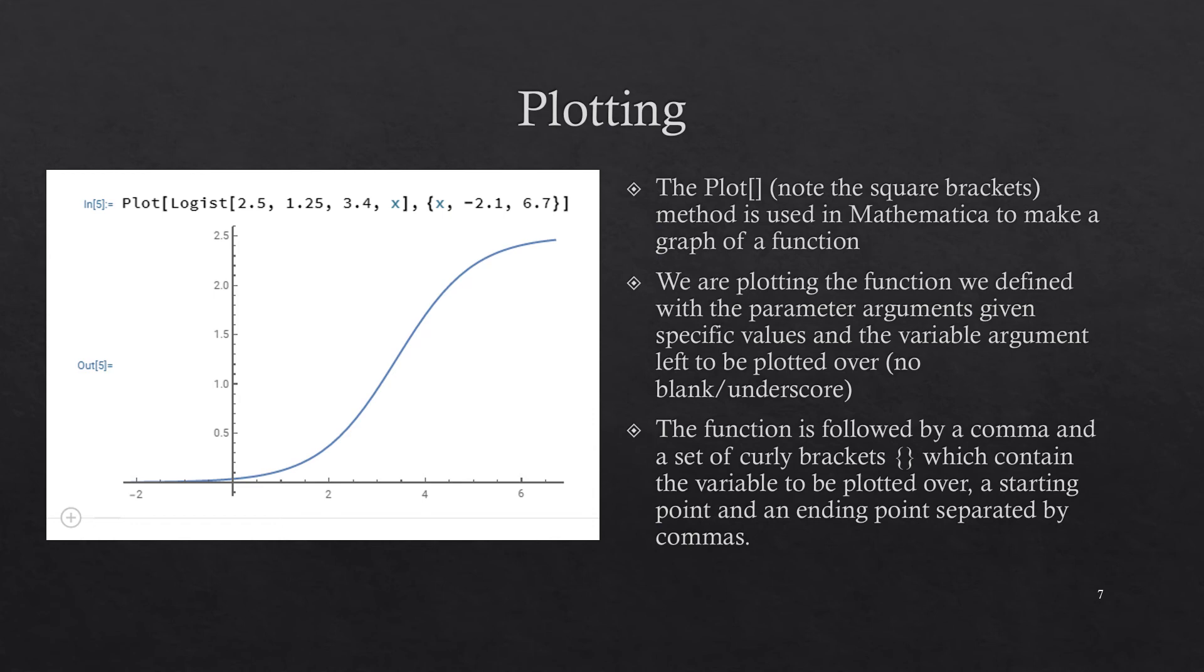And so we plot our function from minus 2.1 up to 6.7. You see it there. The 2.5 was what the logistic function goes up to. The 3.4 is the middle of the curvy part. And the 1.25 had something to do with the speed with which it went from the lower to the upper.